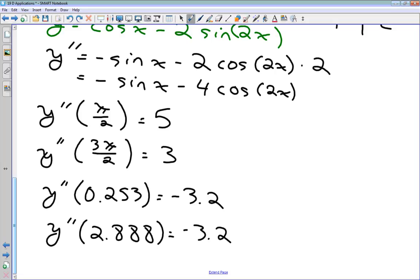So what does the second derivative test tell us? If our second derivative is positive, as it is with 5 and 3, we have a local minimum. So we have a local minimum, another local minimum, and then if our second derivative is negative, we have a local max.